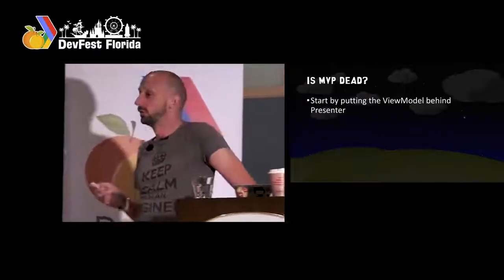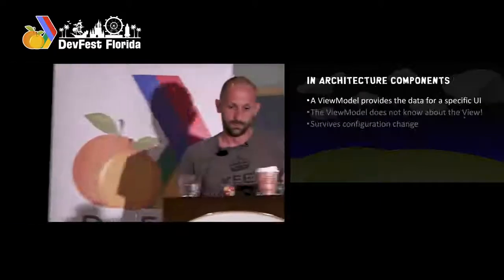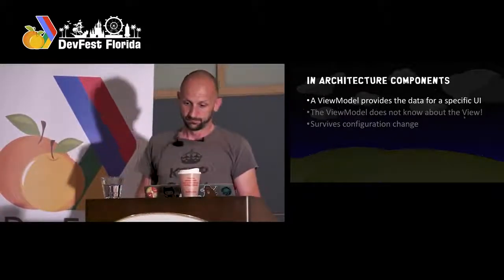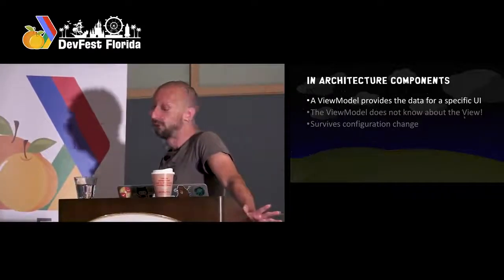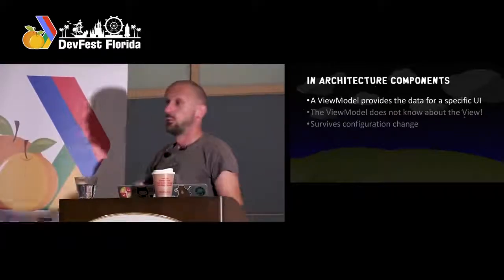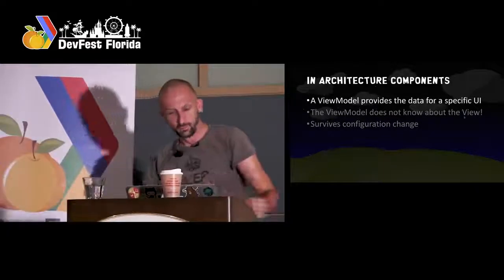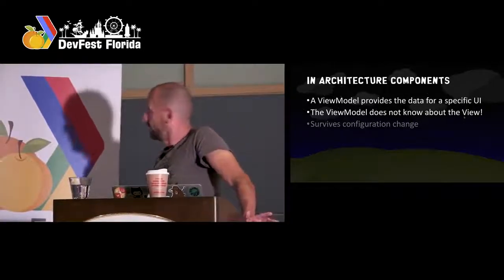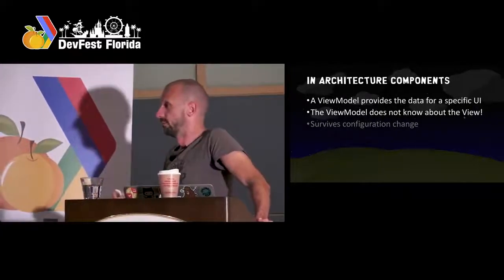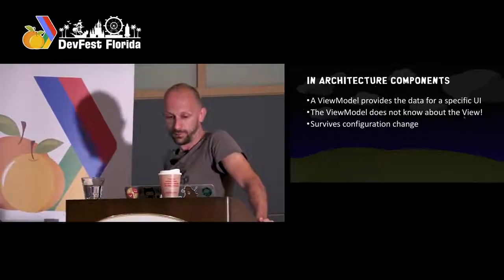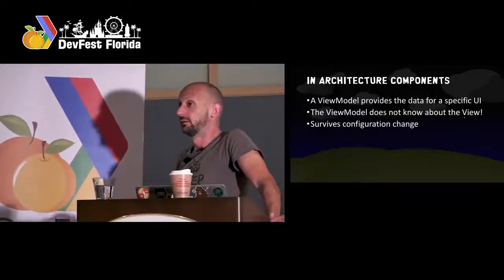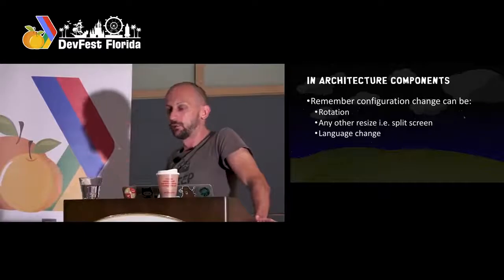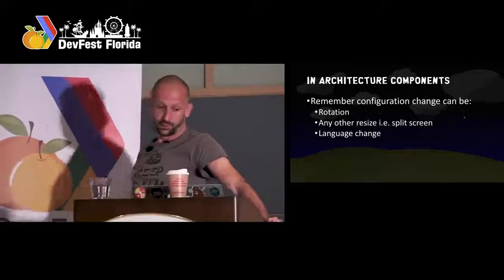So why should you care about this ViewModel? As with MVVM, a ViewModel provides data for the UI — it holds all the UI-relevant data because we have to remove them from activities and fragments. The ViewModel does not know about the view; there is no dependency arrow back to the view. And the one big thing about ViewModel in architecture components is it survives configuration changes. Configuration change — remember, that's rotation. Rotate your phone, everything is gone and everything gets recreated. One of the biggest pain points in Android development.